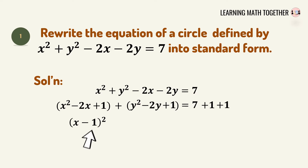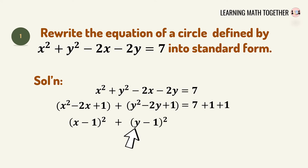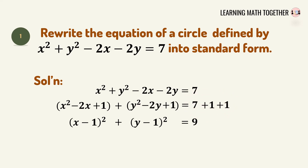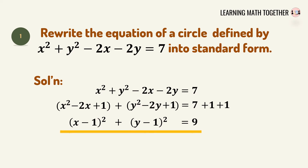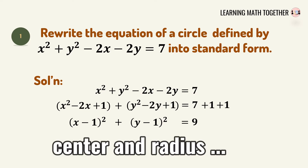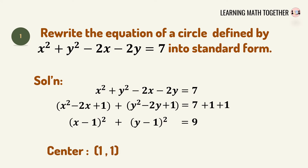Simplifying, we get (x minus 1) squared plus (y minus 1) squared. On the right side: 7 plus 1 equals 8, and 8 plus 1 equals 9. Therefore the standard form is (x minus 1) squared plus (y minus 1) squared equals 9. To get the center and radius: the value of h is positive 1, k is also positive 1, and the radius is the square root of 9, which equals 3.